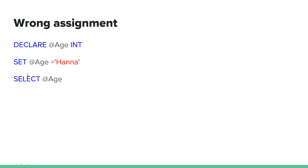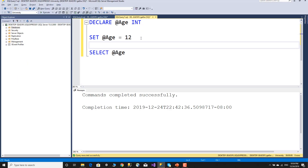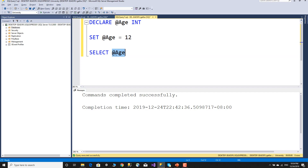For a wrong assignment example, I declare age as integer. Then in SQL Server Management Studio, I open a new query and declare age, assign a value using SET, and then use SELECT. After that, I execute with F5.